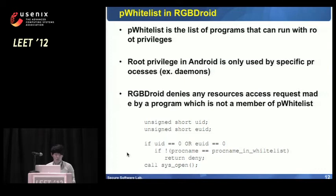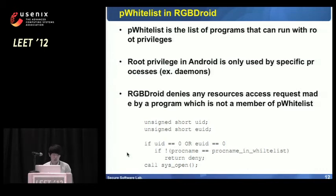P-whitelist is a program list that can use root privileges; any program not listed is not allowed to use root privileges. Programs in the whitelist are mostly daemons that provide various services in Android. P-whitelist applies its algorithm to the open system call function: any process accessing specific resources with root privilege is tested whether it is in the whitelist. If not listed, the access is denied. Additionally, access to required library files such as libc.so that are necessary to execute a program are also denied, causing the attempt to execute the program to fail.